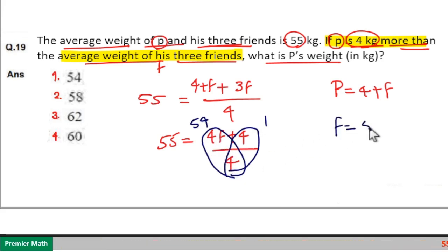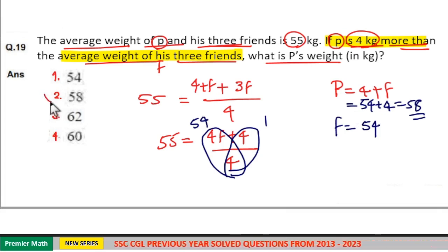So F is equal to 54 means P is equal to 54 plus 4, 58. Option 2 is your answer.